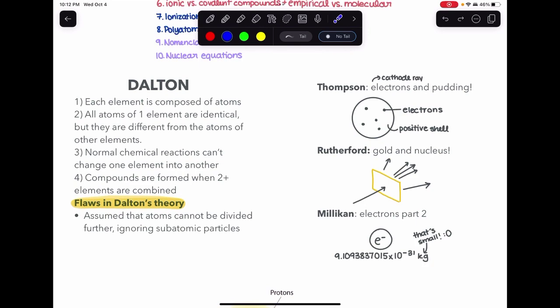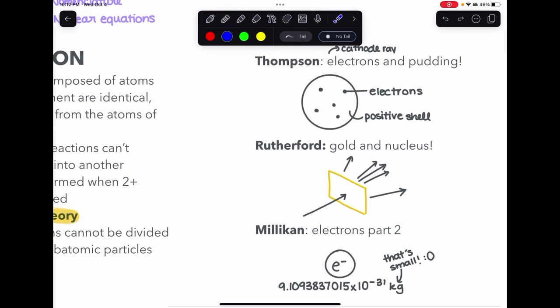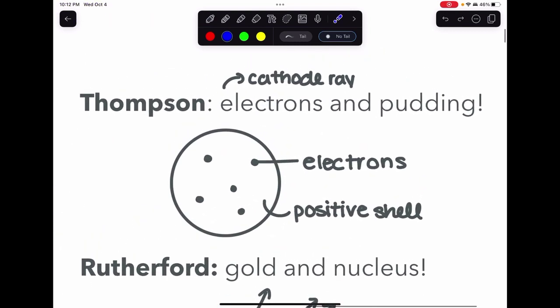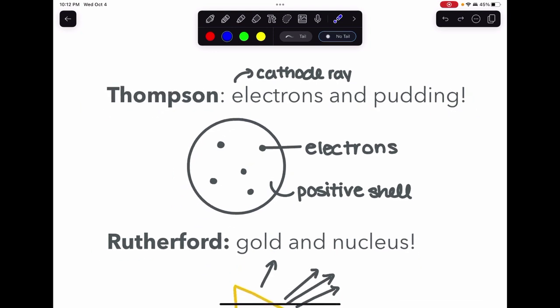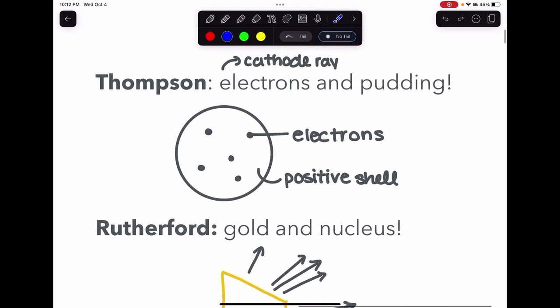Building off of Dalton's atomic theory are these scientists who discovered some more about the structure of the atom. First we have Thompson, and I remember him because of electrons and pudding. He discovered electrons through his experiment with the cathode ray and he developed the plum pudding model that you see right here. Basically these are the little electrons in the pudding and the positive shell. Very basic development of a model.